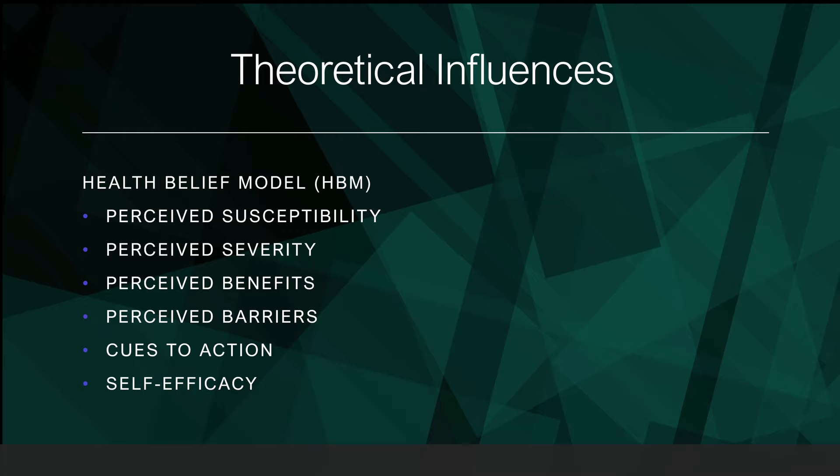The Health Belief Model includes multiple components. Perceived susceptibility is an individual's perception of whether he or she is at risk for contracting a specific illness or health problem. Perceived severity is the subjective feeling of whether a specific illness can be severe — for example, whether it can permanently impair physical or mental functions or is life-threatening. Perceived benefits is an individual's perception of the advantages of adopting recommended actions that would reduce the risk for disease severity, morbidity, and mortality.